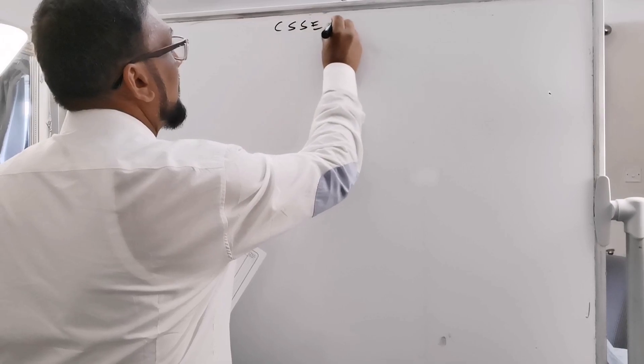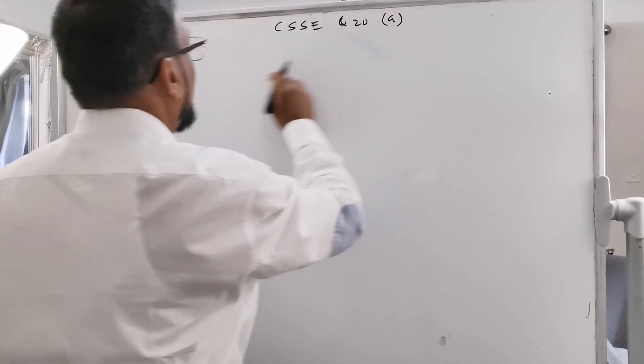Hi guys, my name is Muhammad and today I'm going to solve a couple of questions from the CSS exam 2022, question number 20. Part A says these two shapes have the same perimeter — find the value of x. Part B says these two rectangles have the same area — find the value of y. And the last part says these two rectangles have the same area — find the value of z. We'll solve them one by one.